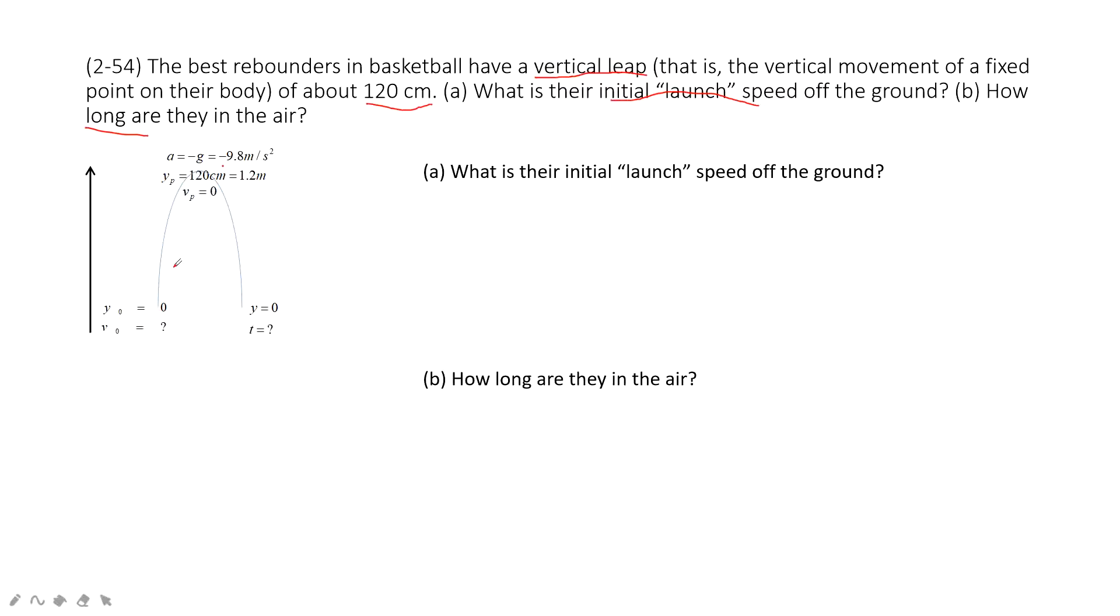So the equation for this one is the velocity with displacement equation. See? This one. And input the known quantities. This one. And then we can solve the initial velocity as v squared equals 2Gyp, right? Input the numbers. We are done. 4.8 m per second.